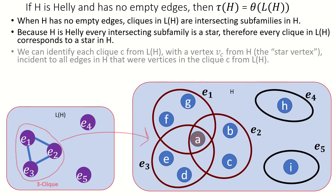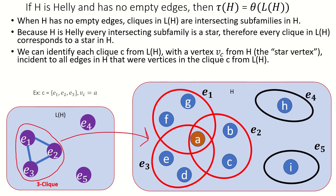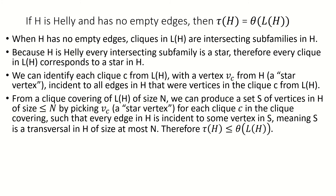This means we can identify, with each clique C in the line graph, a single vertex v_C in the hypergraph that's incident to all the edges in the hypergraph that were members of C in the line graph.